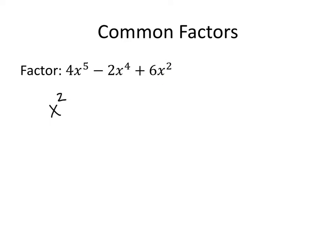If we factor out x squared, what's left over? In the first term, we had 4x to the fifth — x to the fifth just means five x's all multiplied together — so if we remove two of those x's, what's left is 4x cubed. Similarly, in the second term, we had x to the fourth, but then we pulled out x squared, so what's left is x squared. Finally, we had 6x squared, and when we pulled out the x squared, all that's left over is the 6.